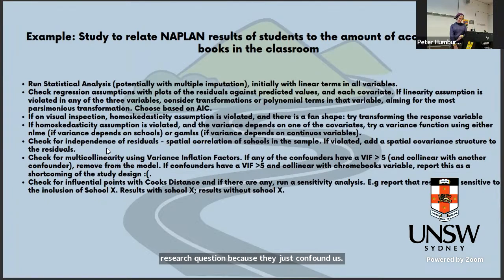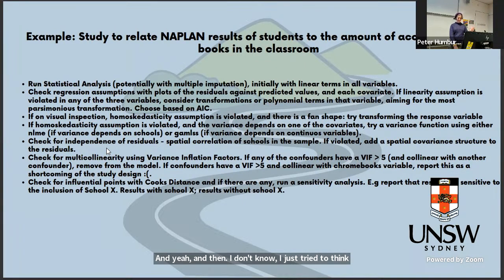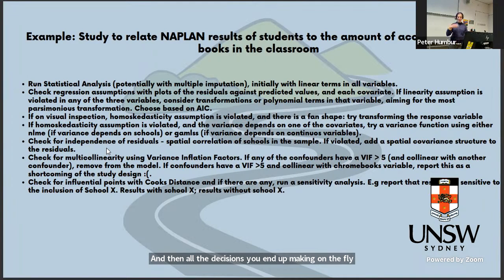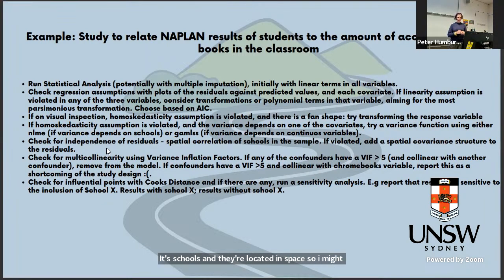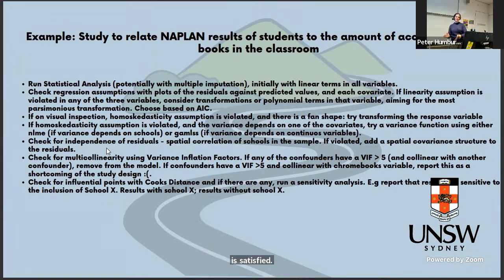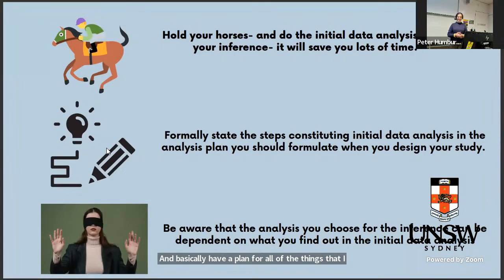If there are any legitimate outliers, I'll keep them and fit a robust linear mixed model instead of a standard linear mixed model, since there's an R package that does it. I'll check correlations between SES confounders and if they're correlated I'll only keep one. I've also thought through what to do if linearity assumptions aren't satisfied, if homoscedasticity is violated, and if there's spatial autocorrelation among schools. The idea is to have a plan for everything that could go wrong so that when I look at my research question, it'll be straightforward.